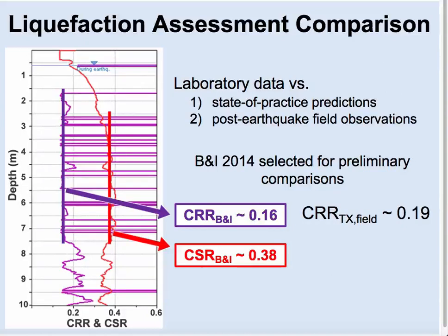In looking at a liquefaction assessment comparison of our laboratory data versus state-of-practice predictions, for this site we had an estimated CRR from laboratory testing of around 0.19, compared with an estimated CRR from the Boulanger and Idriss 2014 method of around 0.16. Comparing the laboratory data with our state-of-practice estimates, we get relatively comparable results. However, comparing both estimates of CRR to the estimate of CSR, we see that both are still well below the estimated seismic demand, leading to factors of safety around 0.5 for this site — yet no surface manifestations of liquefaction were observed.